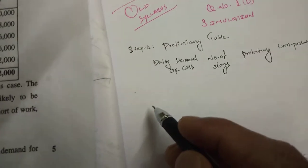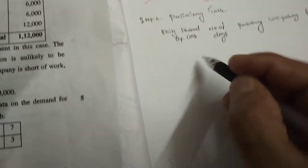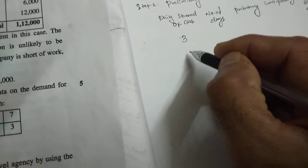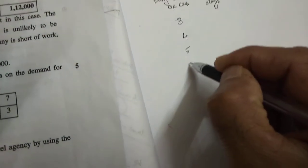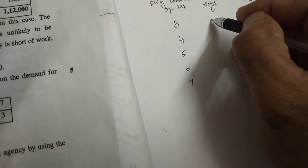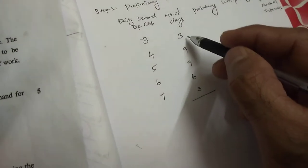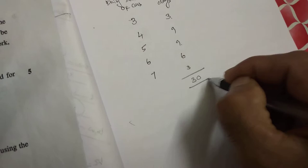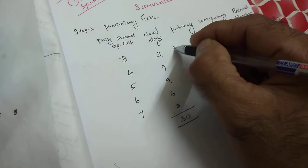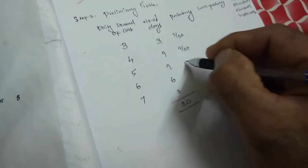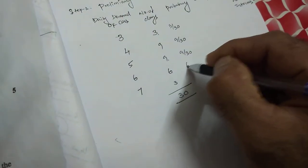For the first column, fill in the data as given: daily demand values are 3, 4, 5, 6, 7. Number of days given are 3, 9, 9, 6, 3. Adding all the number of days: 3 plus 9 is 12, plus 9 is 21, plus 6 is 27, plus 3 is 30. So the probabilities are: 3 by 30, 9 by 30, 9 by 30, 6 by 30, and 3 by 30.